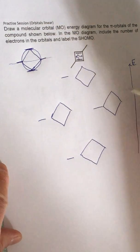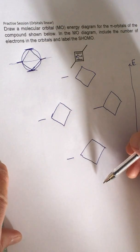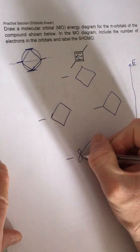Remember as you go up the number of nodes increases, so the lowest energy at the bottom has no nodes, so it'll be all bonding interactions.